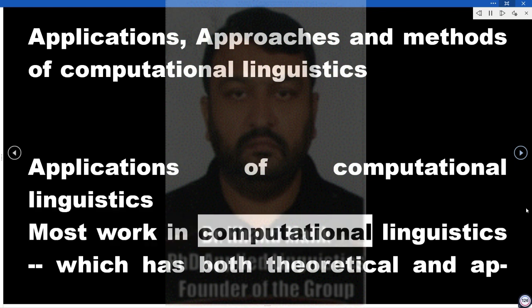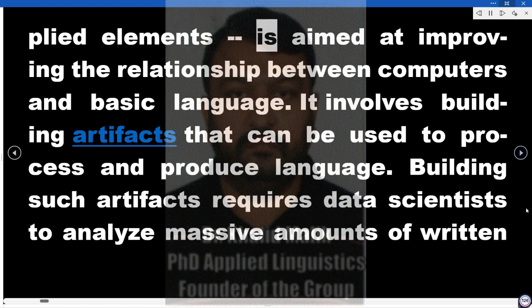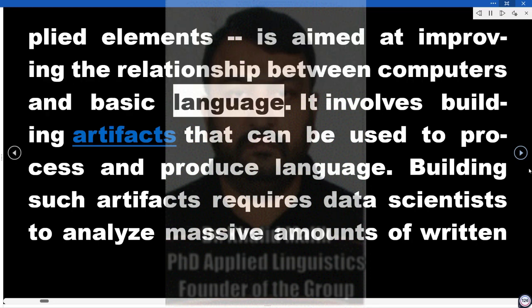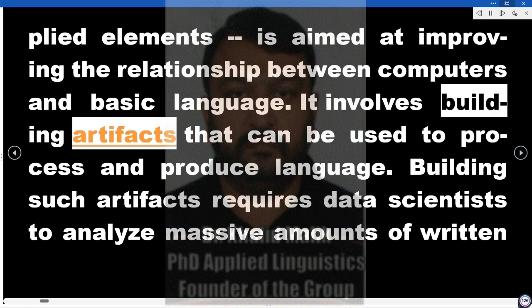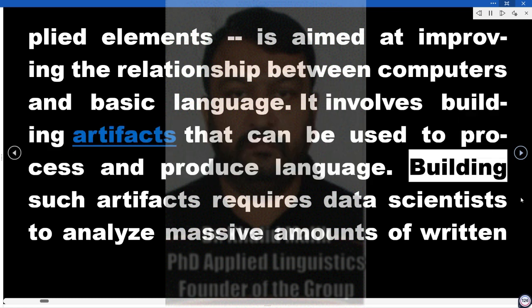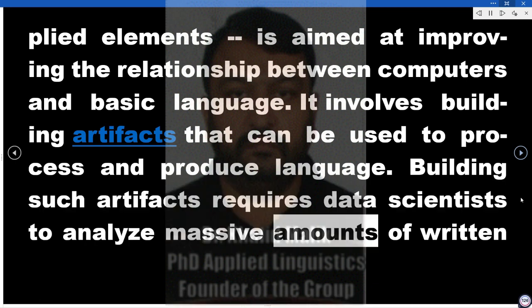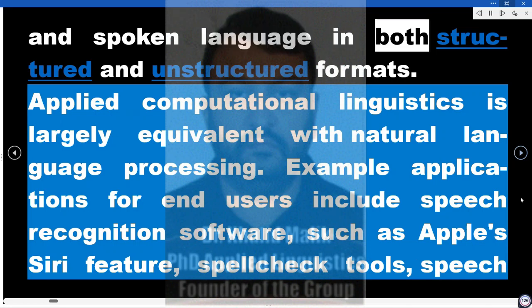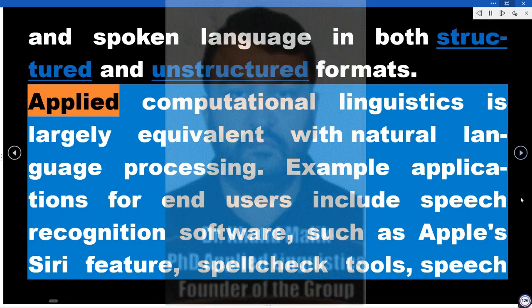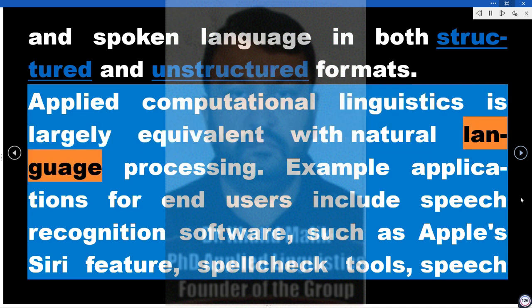Most work in computational linguistics, which has both theoretical and applied elements, is aimed at improving the relationship between computers and basic language. It involves building artifacts that can be used to process and produce language. Building such artifacts requires data scientists to analyze massive amounts of written and spoken language in both structured and unstructured formats. Applied Computational Linguistics is largely equivalent with natural language processing.